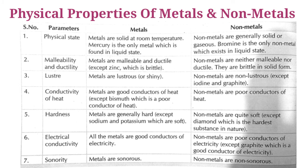Metals are good conductors of heat, except bismuth which is a poor conductor of heat, whereas non-metals are poor conductors of heat. Metals are generally hard; exceptions are sodium and potassium which are soft. Non-metals are quite soft, except diamond which is the hardest substance in nature. All metals are good conductors of electricity, whereas non-metals are poor conductors; the exception is graphite, which is a good conductor of electricity. Metals are sonorous whereas non-metals are non-sonorous.